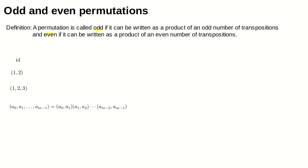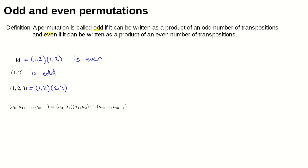As an example, the identity is always even because you can write the identity permutation as a product of an even number of transpositions, namely two transpositions. On the other hand, if you just take a transposition on its own, well that's visibly a product of one transposition, so that thing is odd. And a 3-cycle like (1 2 3) — we know we can write it as (1 2) composed with (2 3), so that's a product of an even number of transpositions, making it even.